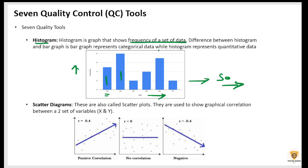Now, there is a very important question that comes up. What's the difference between histogram and bar graph? The difference is that bar graph represents categorical data while histogram represents quantitative data.